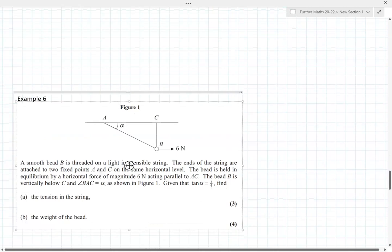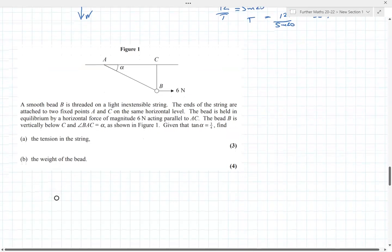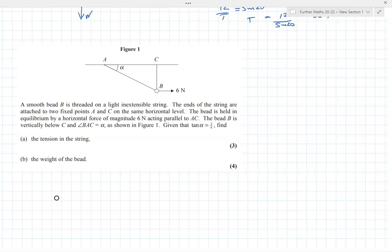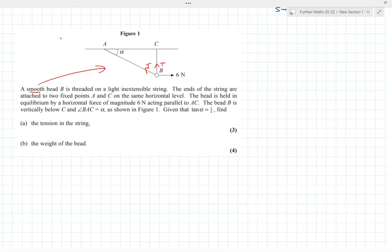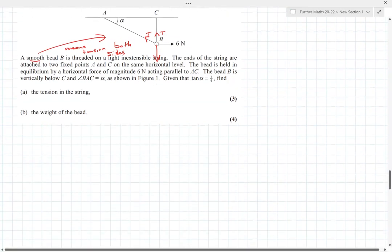Let's have a look at another question. This is a good example where we would never be able to do a three force diagram because we've got four forces effectively. It's talking about a smooth bead threaded on a light inextensible string. The fact that it's smooth is quite important because that will mean the tension both sides is the same. Smooth means tension both sides same. They do expect you to understand a few modeling considerations. Notice we've got four forces here because the tension is occurring twice, pulling both ways.